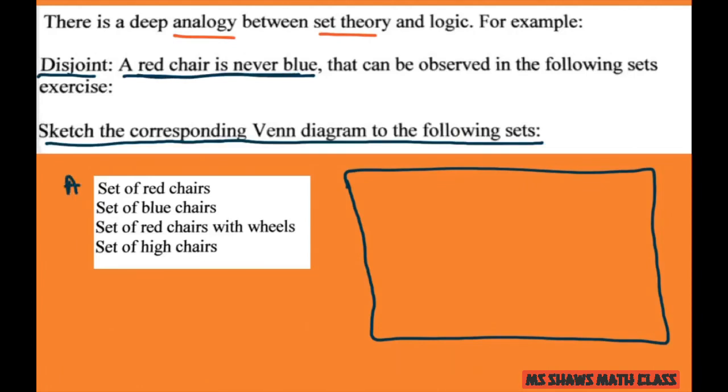So we have A, B, C, and D sets. We have the set of red chairs - that would be your A. Set of blue chairs - well, red chair is never blue, so that would be your B set.